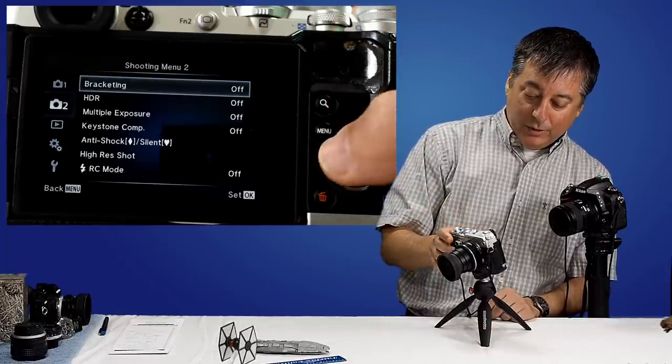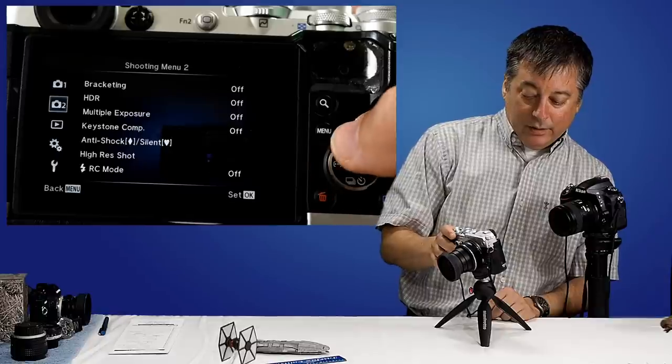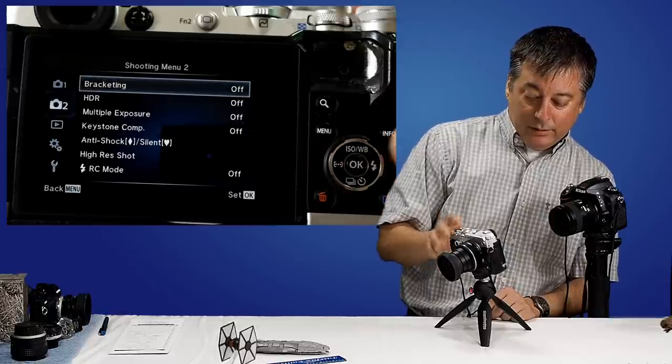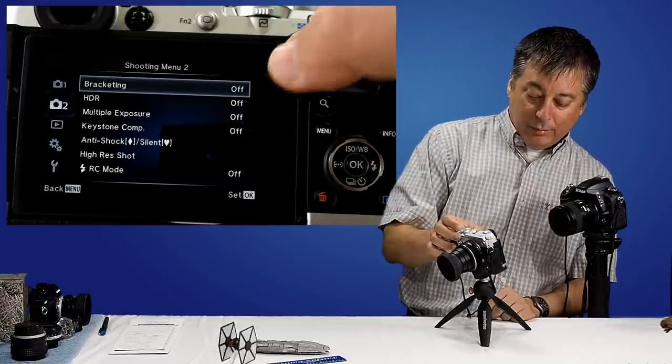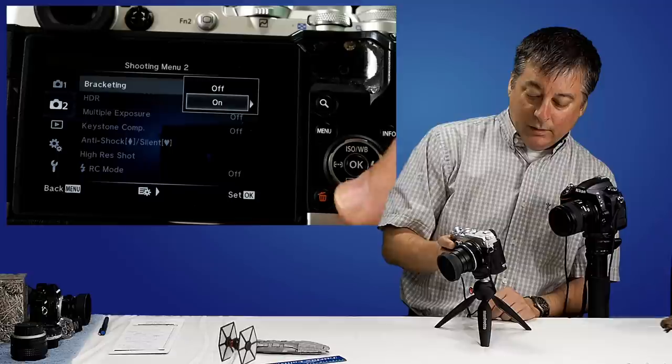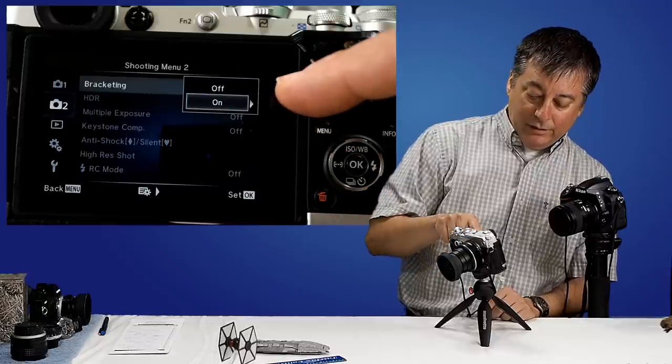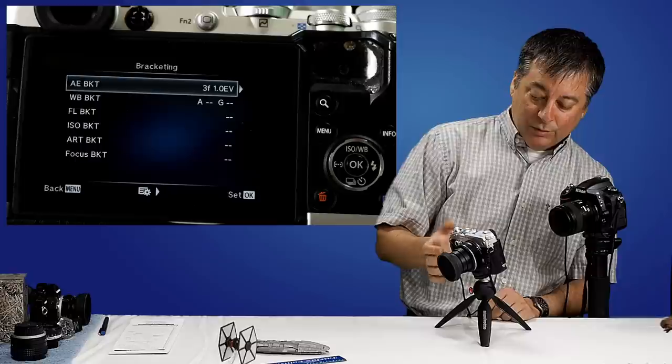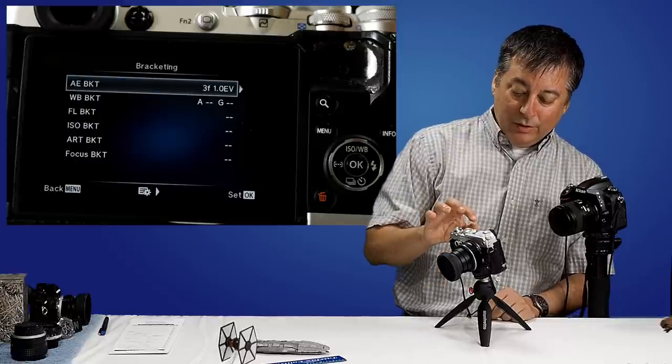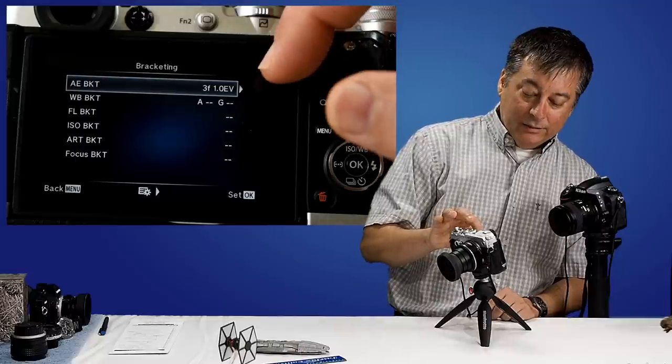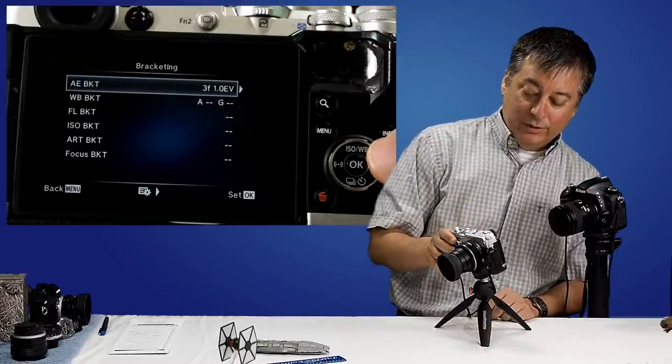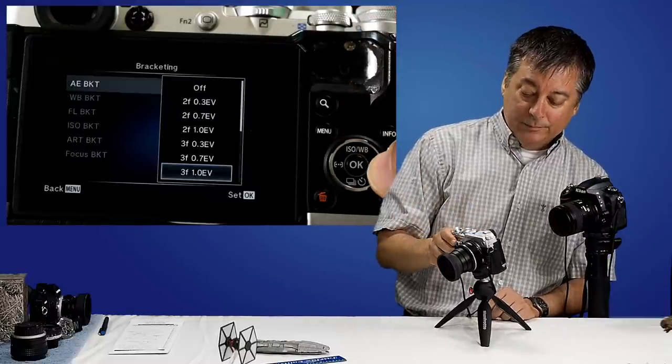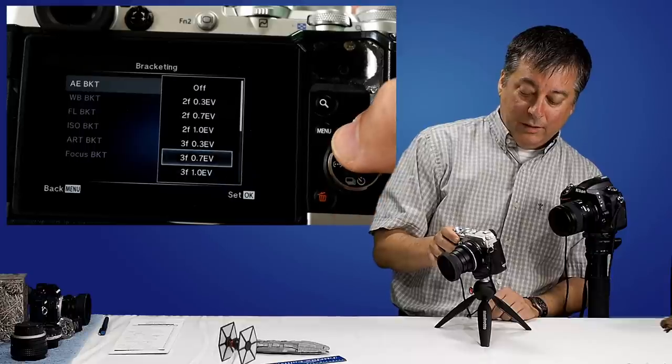First thing I'll do is go into the camera. It's here in shooting menu number two. Right now bracketing is off. And I'll scroll down. This turns it on, but you'll notice a little arrow here. So let's right click here. That means there's more options. The default setting for bracketing is auto exposure bracketing, which is the most common use for bracketing and just about any decent camera can do.